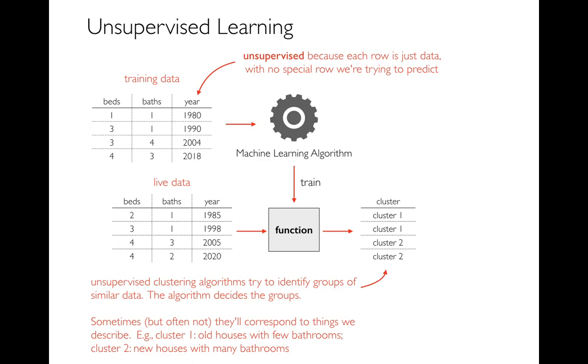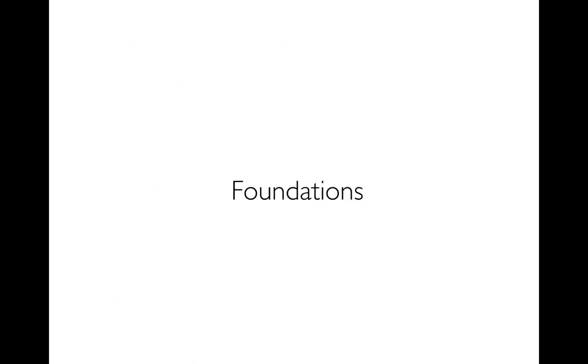The algorithm is just noticing, hey, things tend to fall into these different groups. Now, it's totally possible after we come up with these different clusters that we could retroactively look back and see, oh, cluster one tends to be old houses with few bathrooms. But it's also possible that there will be no easy way to describe what the clusters are that get discovered by these systems.